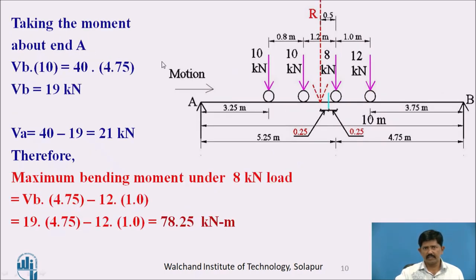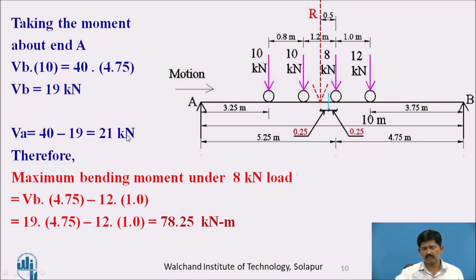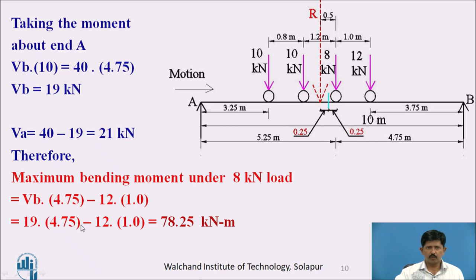Taking moment about A to find reaction VB: VB into 10 equals 40 into 4.75, giving VB equals 19 kN. Therefore VA equals total load minus VB equals 21 kN. For maximum bending moment under the 8 kN load, taking from the right: VB into 4.75 minus 12 into 1 equals 19×4.75 minus 12×1 equals 78.25 kN·m.